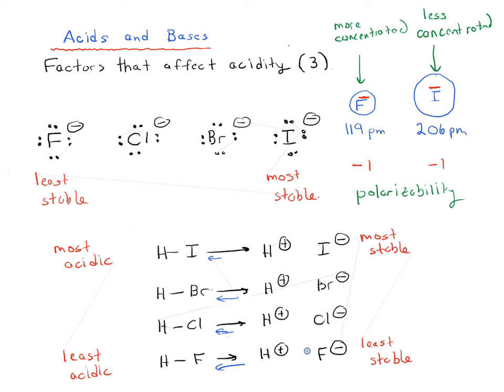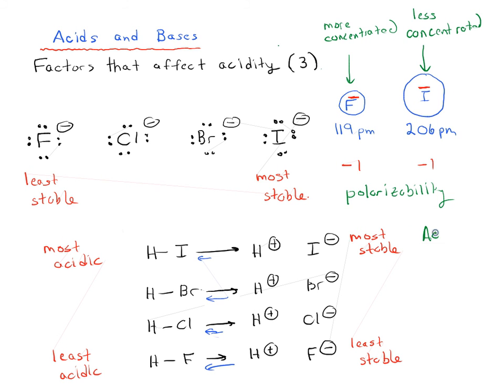So the most acidic species is HI, and the least acidic species is HF. So the bottom line here is that acidity increases as you go down the periodic table, exclamation point. And this does not just apply to the halides.